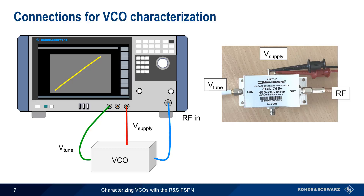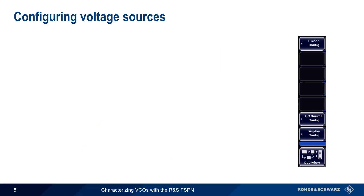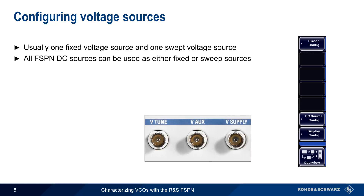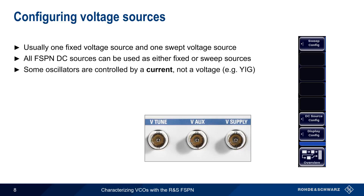Once these physical connections are made, all further configuration is done through the FSPN user interface. VCO characterization involves two DC voltage sources: one fixed source and one tunable or swept source. All DC sources on the FSPN can be configured as either fixed or swept. Note that some oscillators, such as YIG oscillators, are controlled by a current rather than a voltage, and this is also supported by the FSPN.